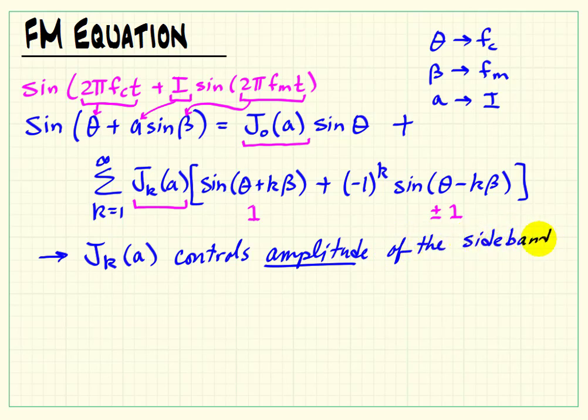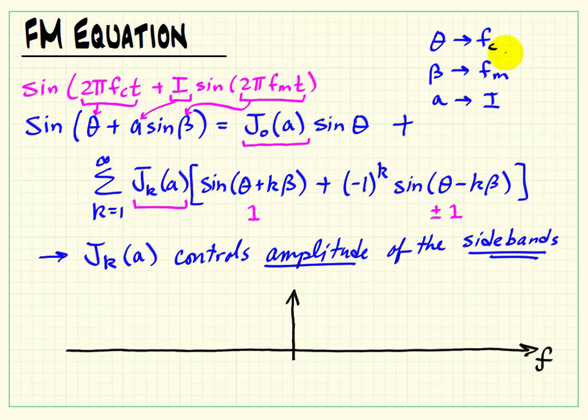And that will be discussed more completely in a separate video from this one. What I'd like to do here is focus on how these sidebands are actually arranged as spectral components. So we see sine of theta, so that means we have a component at fc.